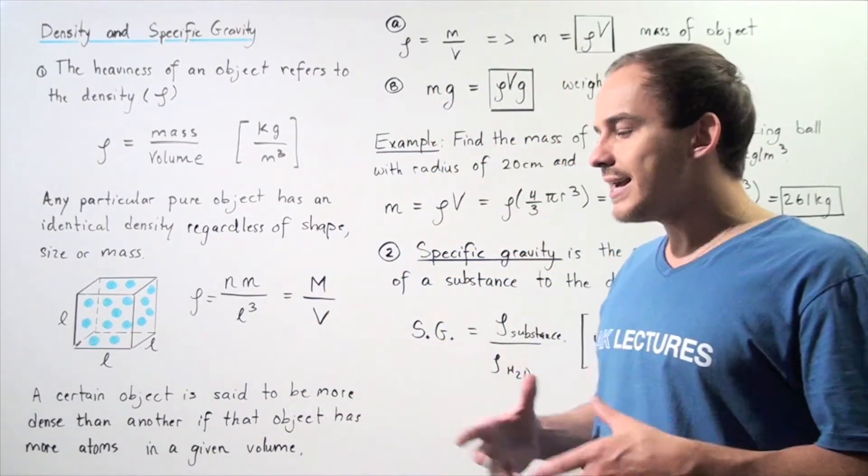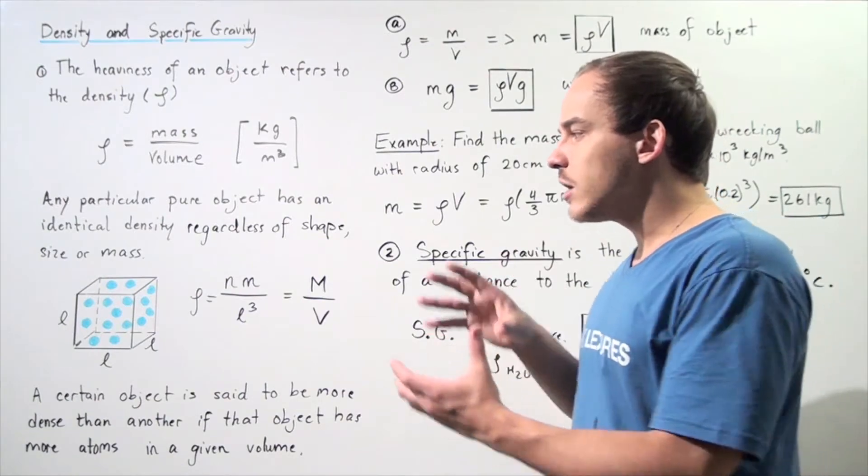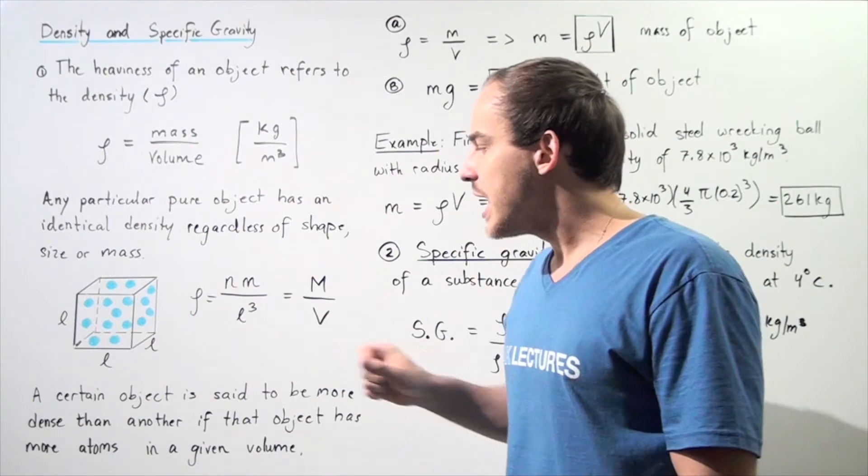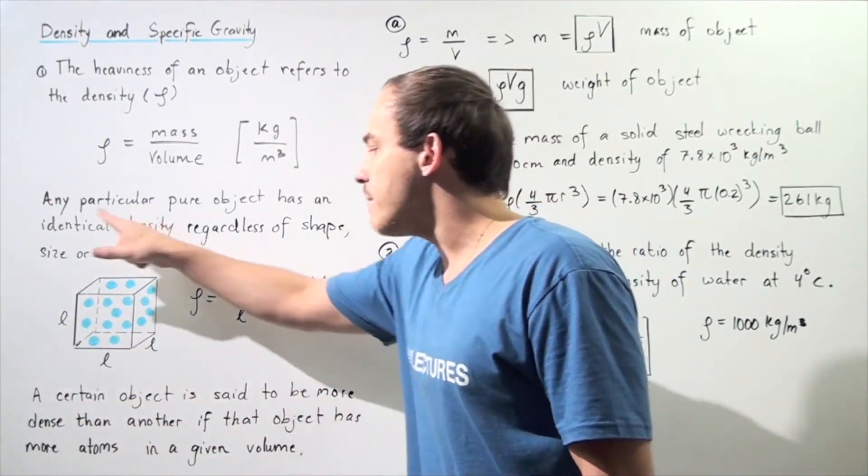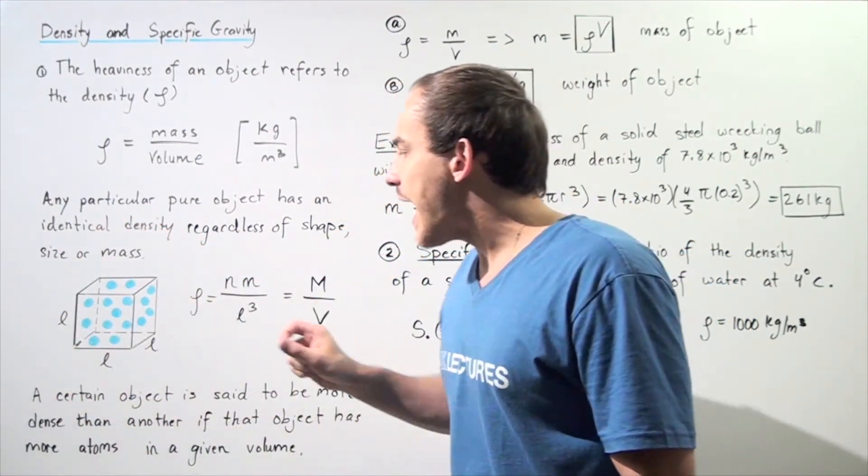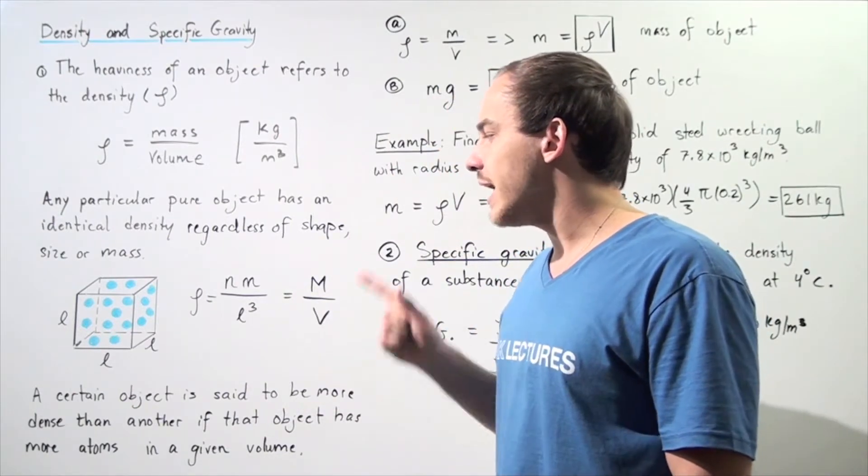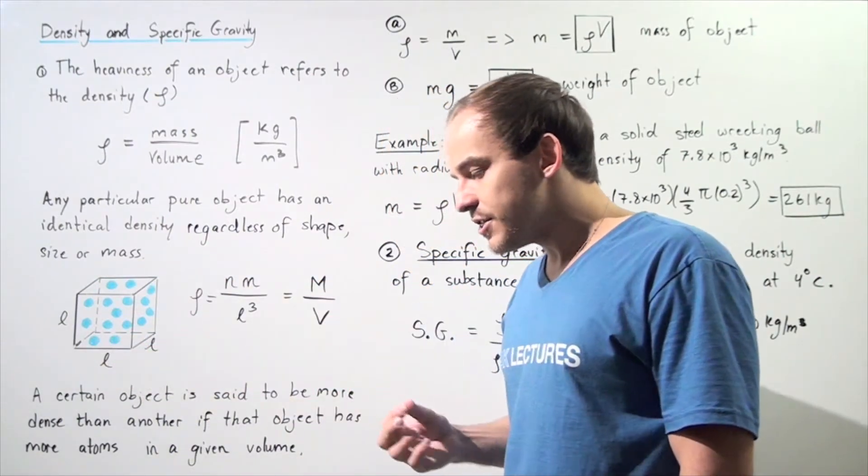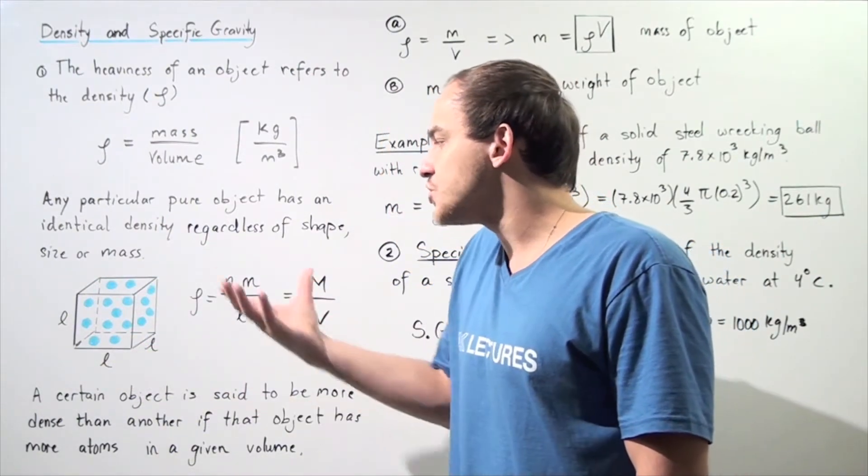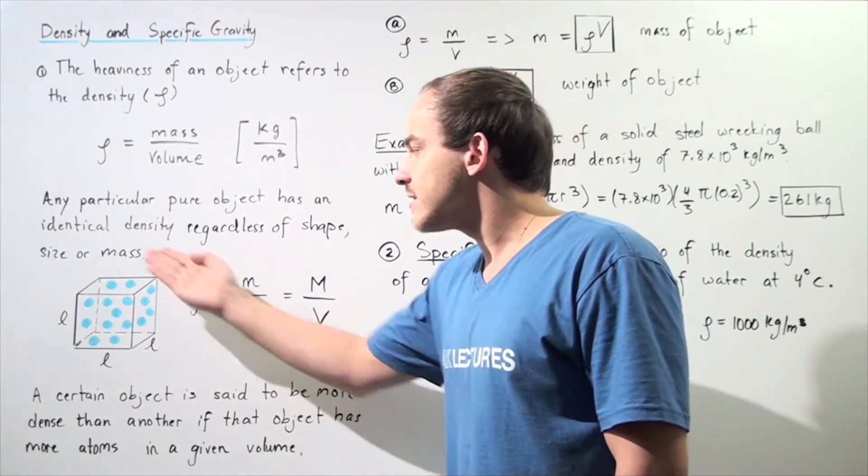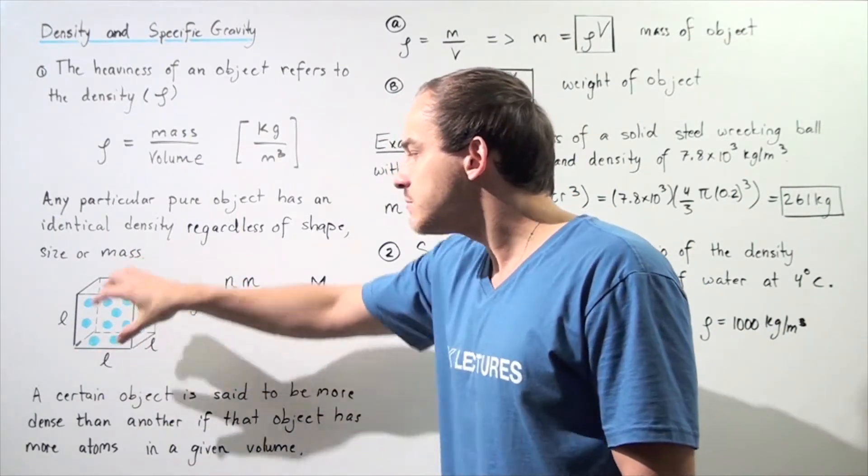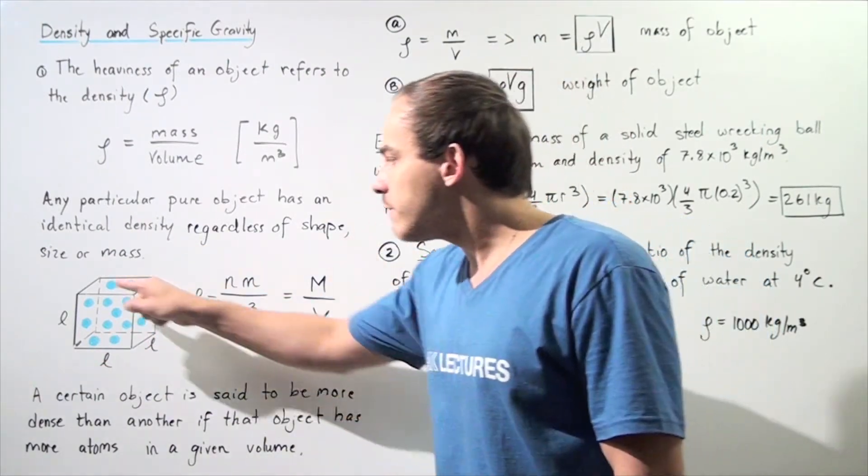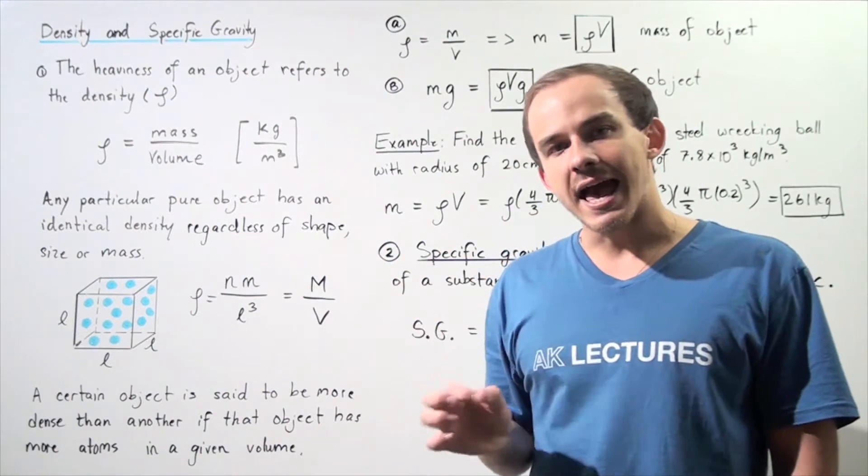Let's suppose we take a certain pure object and a cubic chunk of that object. We have a three-dimensional cubic chunk where the length is L, the height is L, and the width is L. These blue particles are the atoms that compose our substance. The number of atoms inside this cubic volume is N.